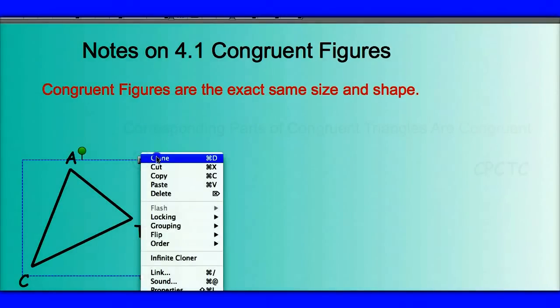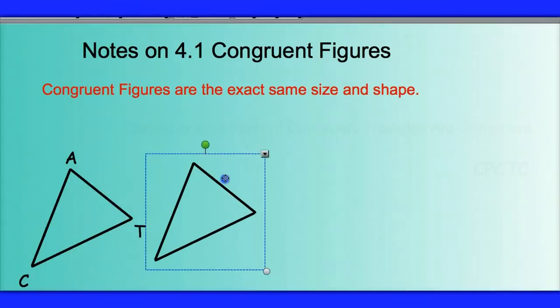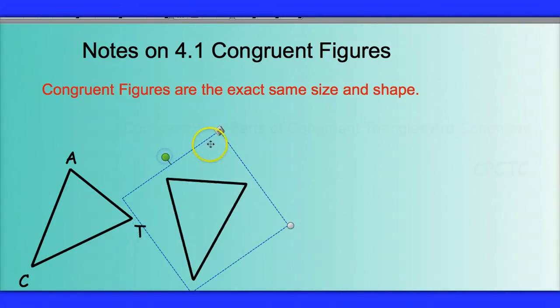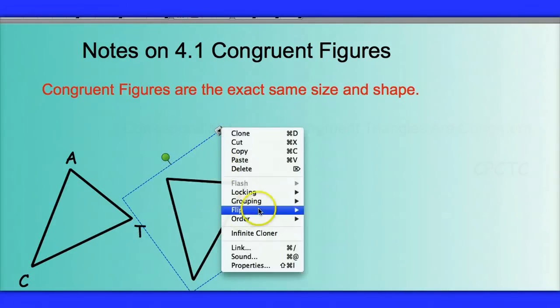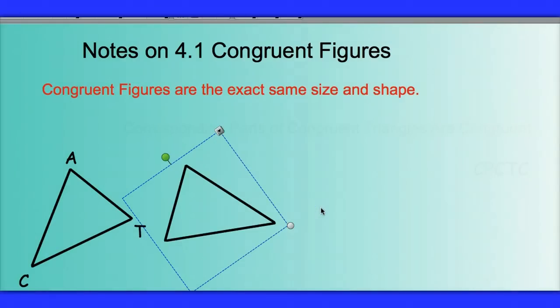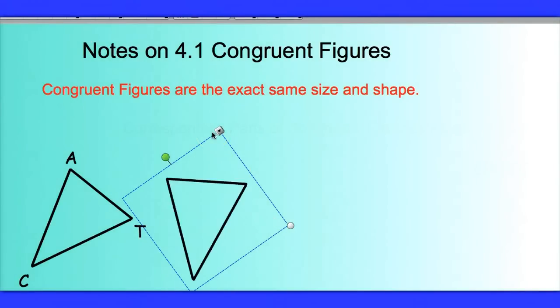So here, if I clone this triangle, we can see that the clone is the exact same size and shape. And it doesn't matter if I rotate it or flip it left, right, up, or down, it's the same shape, the exact same size and shape.